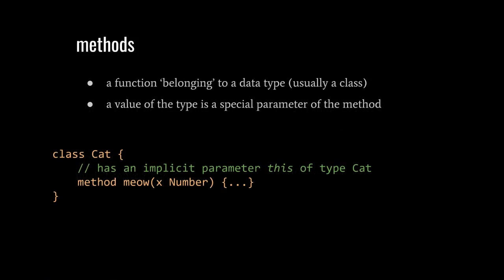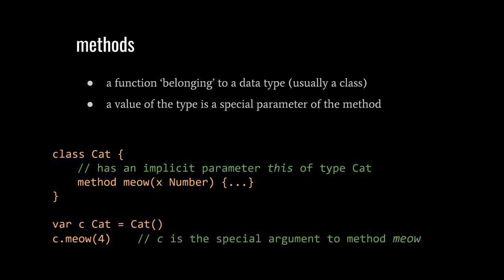A method is basically a function that belongs to a particular data type. The method has a special parameter, usually called this, which is of the same type as the data type to which the method belongs. Say, for example, we have a class cat, and we give cat a method named meow, which takes a number as input. The method actually also takes as input a cat, but that is left implicit. To call this method, the syntax is a little odd. The regular arguments, here a single number, are put inside the parentheses like normal, but the cat value is placed before the name of the method, separated by a dot.